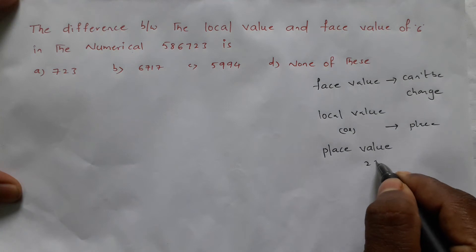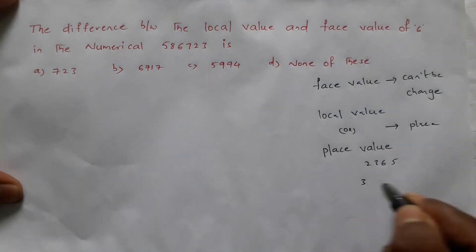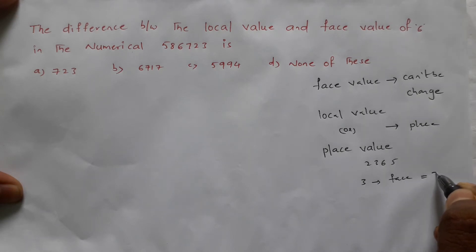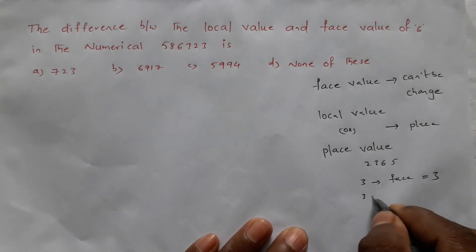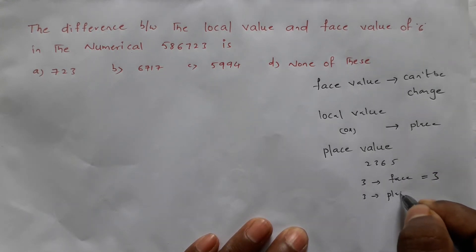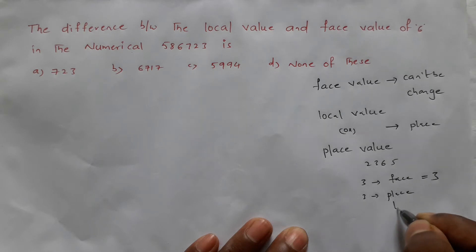For example, take the number 2365. The digit 3: face value is 3. Face value is always 3, it never changes. But place value of 3 depends on position.